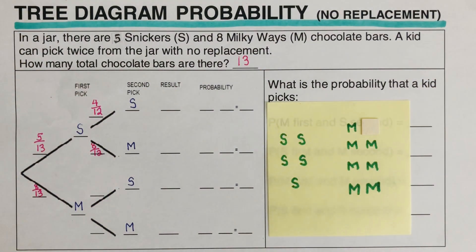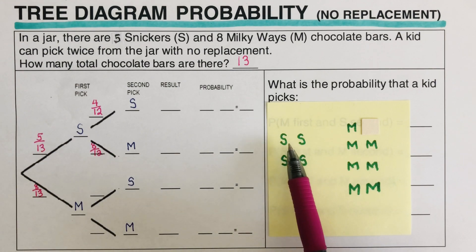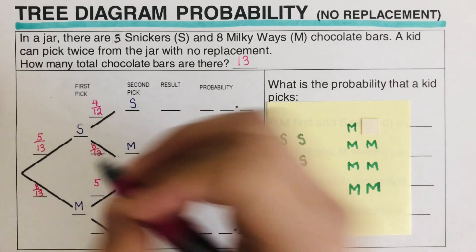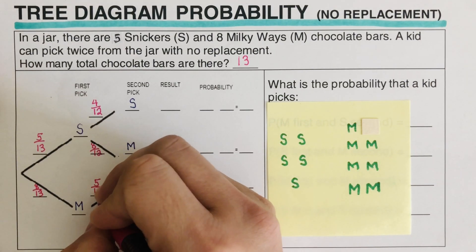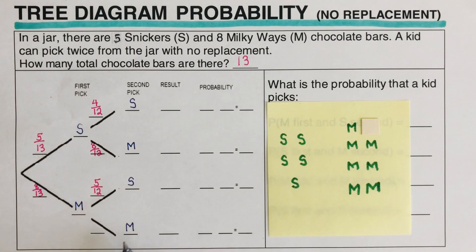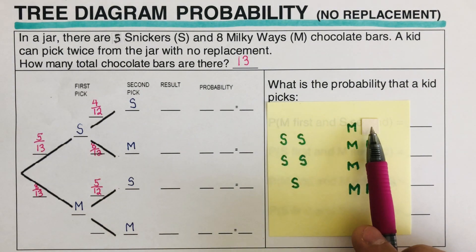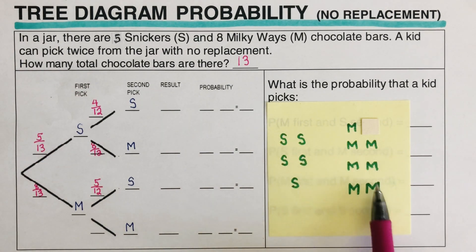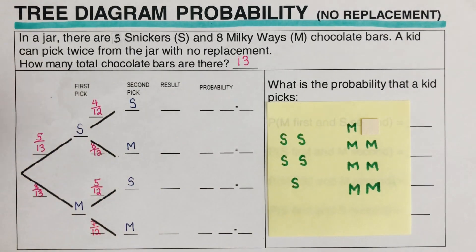Now, if a Milky Way was picked first, I cover one Milky Way. The probability of picking a Snickers on the second pick is five over twelve. The probability of picking a Milky Way when a Milky Way was already taken is seven over twelve.